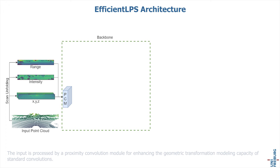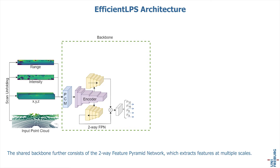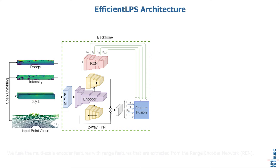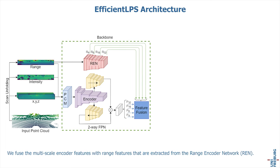The input is processed by a proximity convolution module for enhancing the geometric transformation modeling capacity of standard convolutions. The shared backbone further consists of the two-way feature pyramid network, which extracts features at multiple scales. We fuse the multi-scale encoder features with range features extracted from the range encoder network.